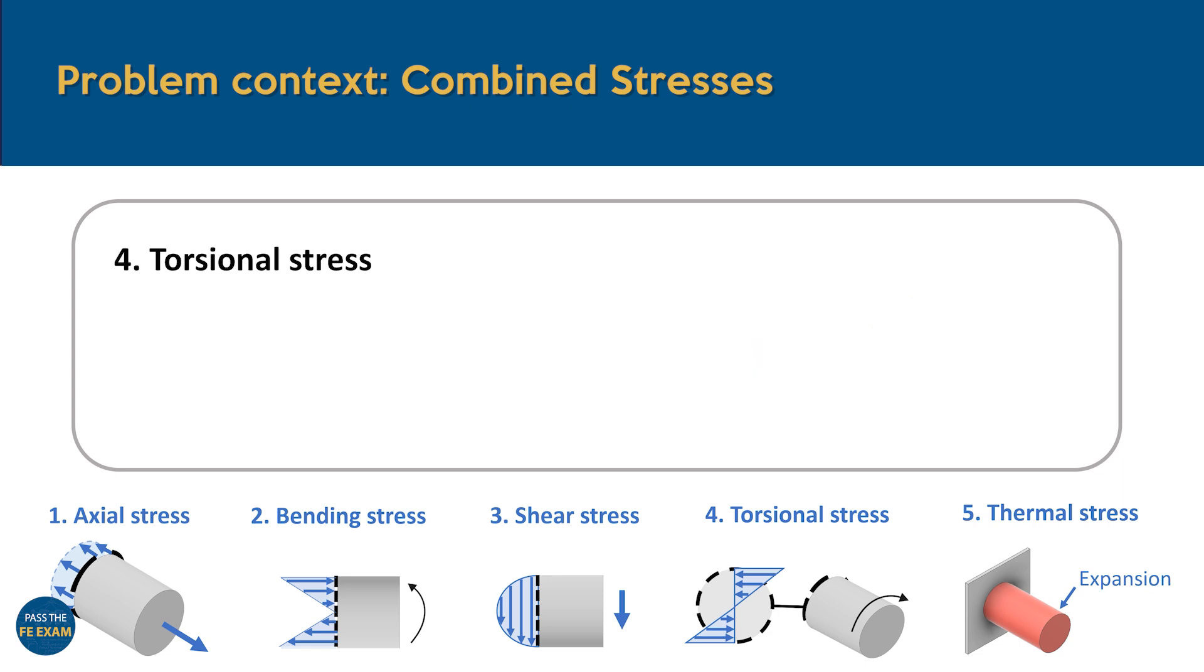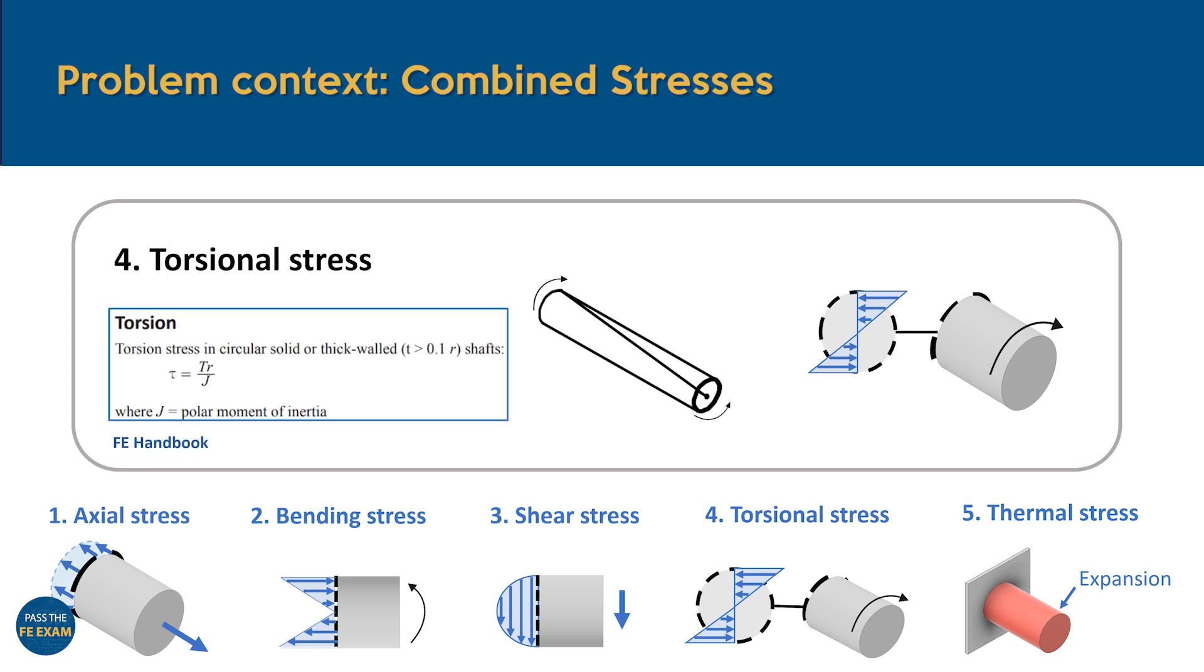Now, let's look at torsional shear stress. This stress happens when a twisting force acts on a beam, as shown here. The stress at the center of the cross-section is zero and increases towards the edges. This is because the fibers near the center barely twist, while the outer fibers experience the most rotation. As you move outward from the center, the shear stress increases linearly, reaching its maximum at the outer surface, where the material resists twisting the most. For reference, we've included the FE handbook formula here again.